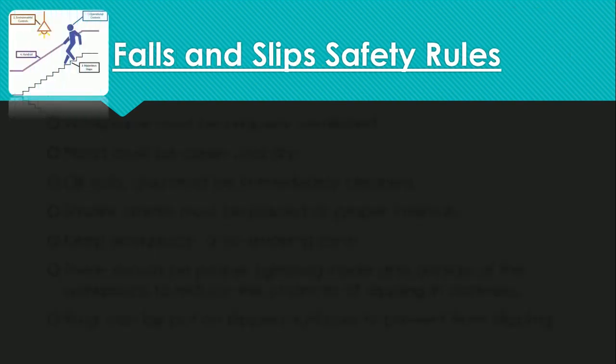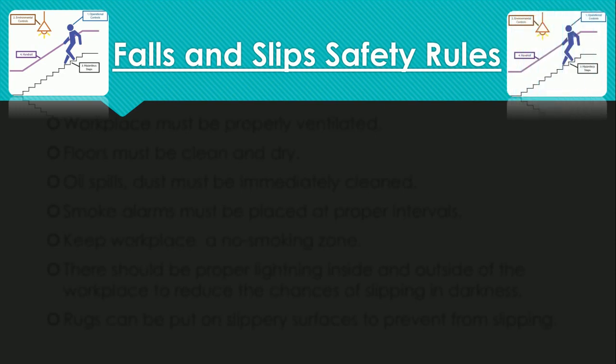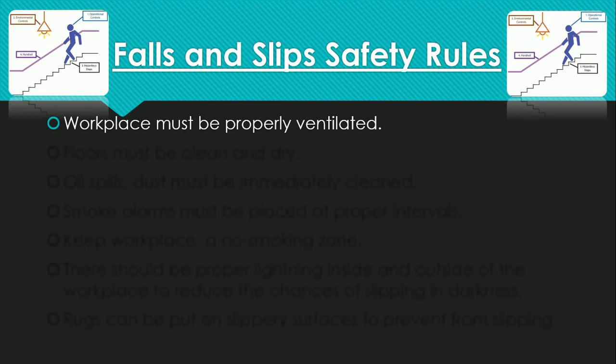Next, we have fall and slip safety rules. When you are working at a workplace, you have to move from floor to floor — first floor, second floor, third floor — or come down. There are lifts, but sometimes you have to use the stairs. The workplace must be properly ventilated with proper windows. The floor must be clean and dry to prevent slipping. Any oil spills or dust must be immediately cleaned so that no one slips.